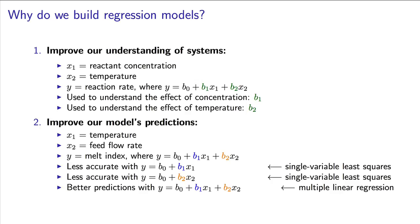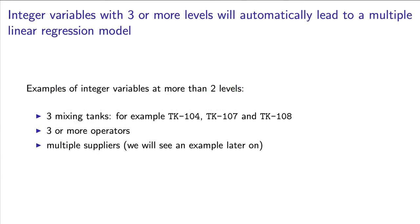We will also see later that multiple linear regression naturally arises when we use integer variables. For example, if we have three mixing tanks, we'll end up with a multiple linear regression model.